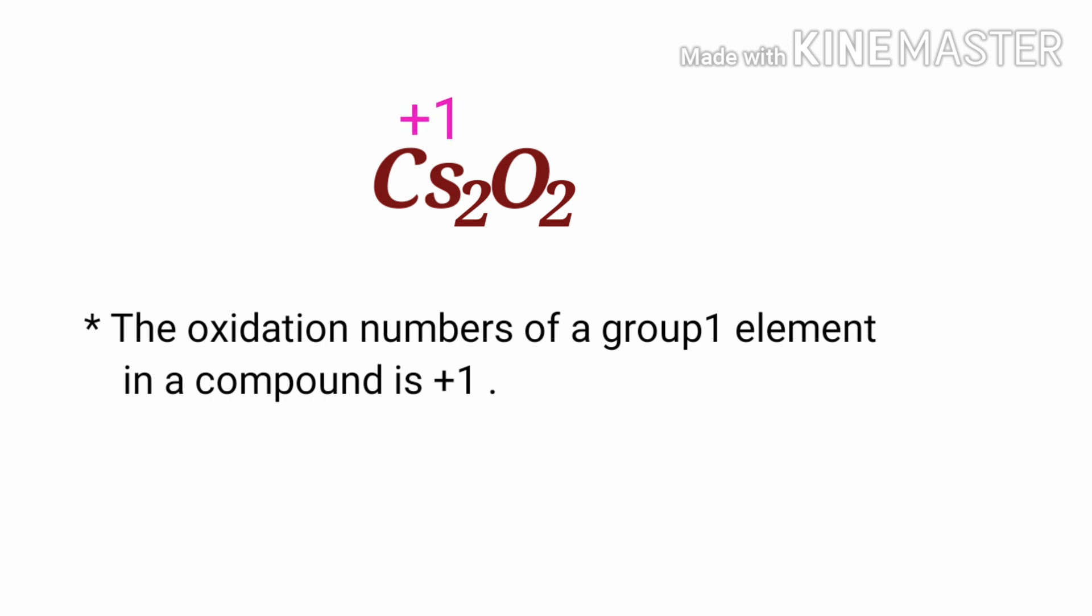We can write the oxidation number of the element above its symbol and the total number of the oxidation number of the atoms below its symbol. Here 2 cesium atoms are present, therefore the total oxidation number of cesium is plus 2.